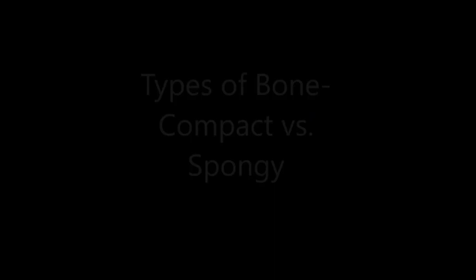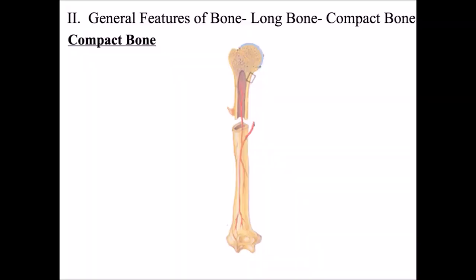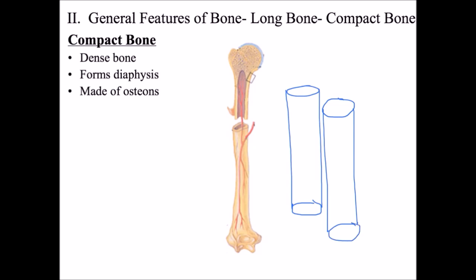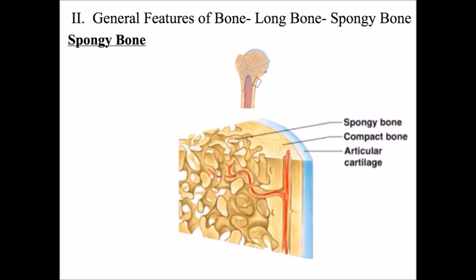There are two types of bone in the human body. The first is compact bone, also called dense bone, which is found in the diaphysis or shaft and is made up of osteons — long cylindrical structures that run the length of the diaphysis. Because osteons run the entire length of the diaphysis, compact bone is good at withstanding compression forces but is not good at withstanding forces from other directions.